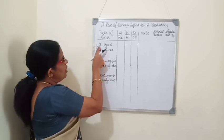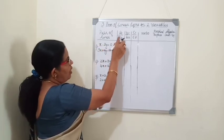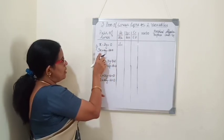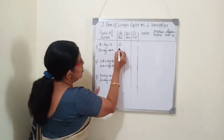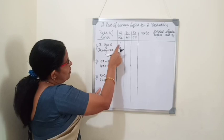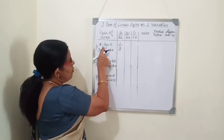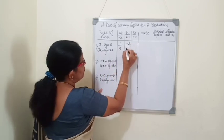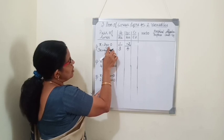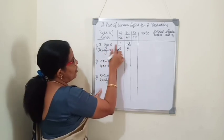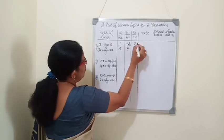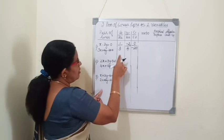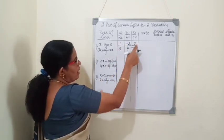In the first equation, the coefficient of x is 1, so a1 is 1. The coefficient of x in the second equation is 3, so a1 by a2 is 1 by 3. For b1 by b2, b1 is minus 2 and b2 is 4. For c1 by c2, the constant in the first equation is 0 and in the second equation it is minus 20, so c1 by c2 is 0 by minus 20.